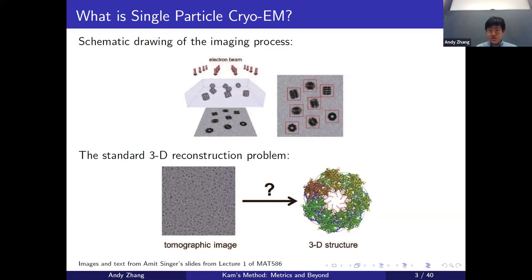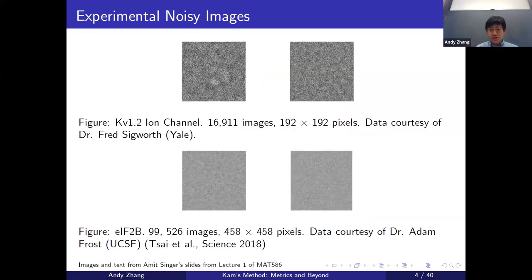The second main issue with cryo-EM is very high noise. When we shoot electrons through, we don't want to shoot too many because we risk damaging the protein. We have to use very low dosage electrons, and because of this we'll see very high noise in our images. To illustrate that, here we have a couple of experimental noisy images.